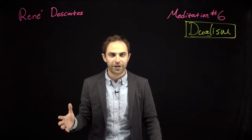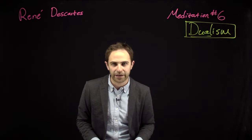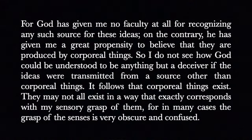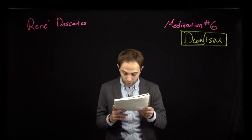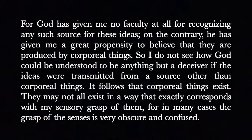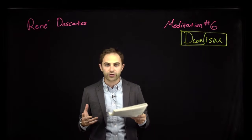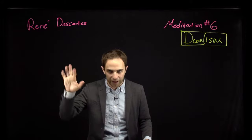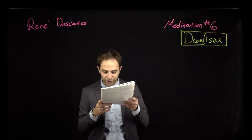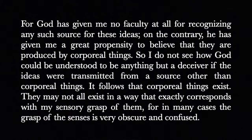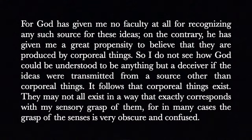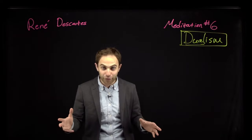Here's what he says to prove that those things exist, on page 8079: 'For God has given me no faculty at all for recognizing any such source for these ideas' — meaning a source other than the physical world for his ideas of objects in the physical world. 'On the contrary, he has given me a great propensity to believe that they are produced by corporeal things.' Corporeal means having a body — physical, ordinary material objects like stones and mountains and hands and feet and tables and chairs. 'So I do not see how God could be understood to be anything but a deceiver if the ideas were transmitted from a source other than corporeal things. It follows that corporeal things exist. They may not all exist in a way that exactly corresponds with my sensory grasp of them, for in many cases the grasp of the senses is very obscure and confused.' In that short passage, Descartes proves that the physical world exists.